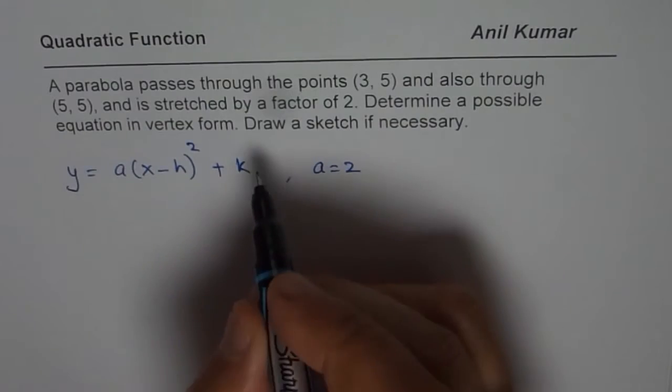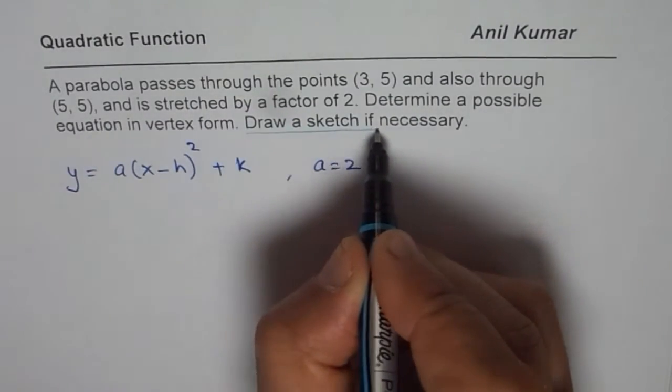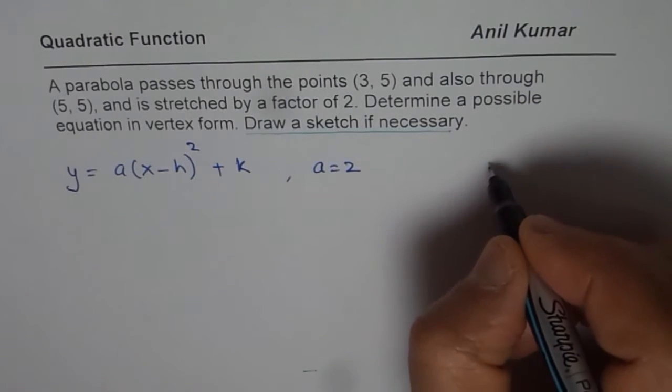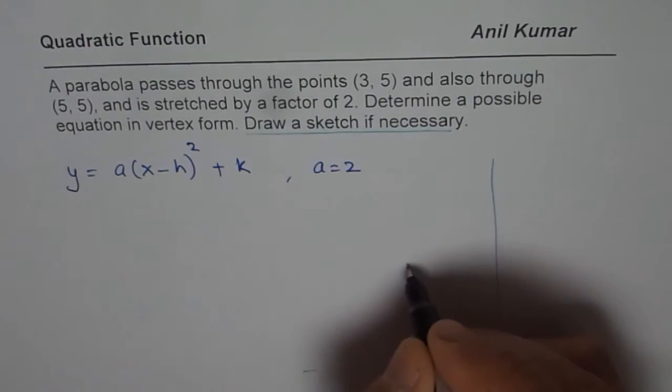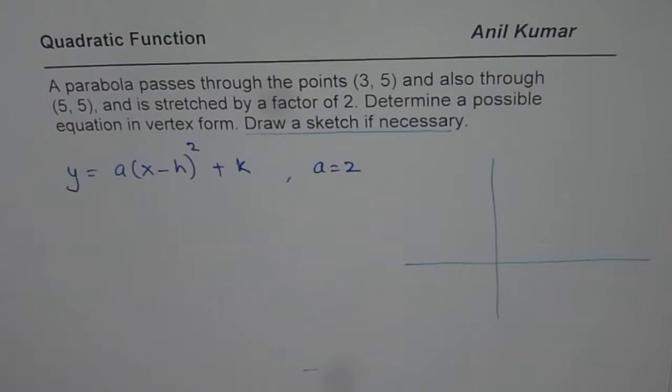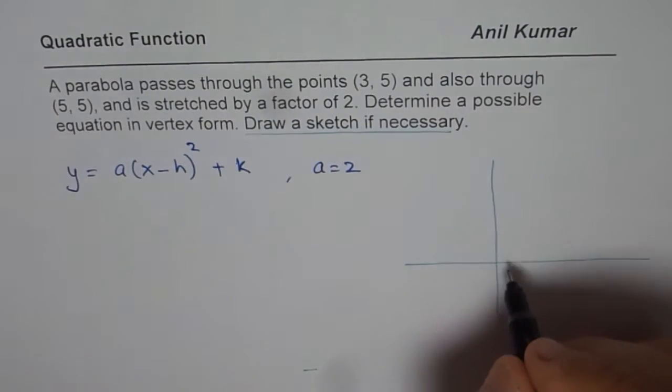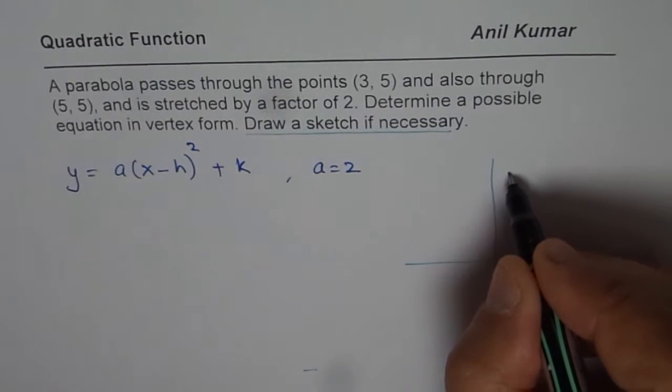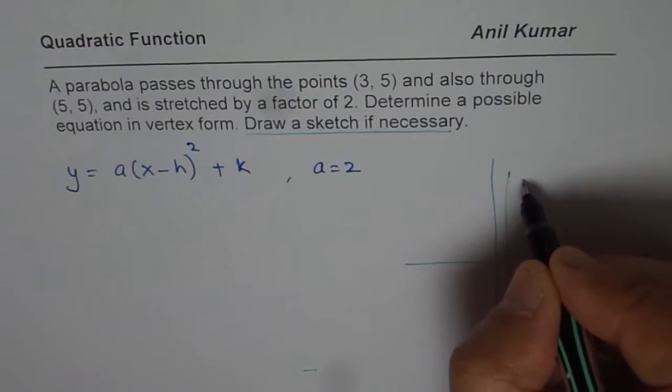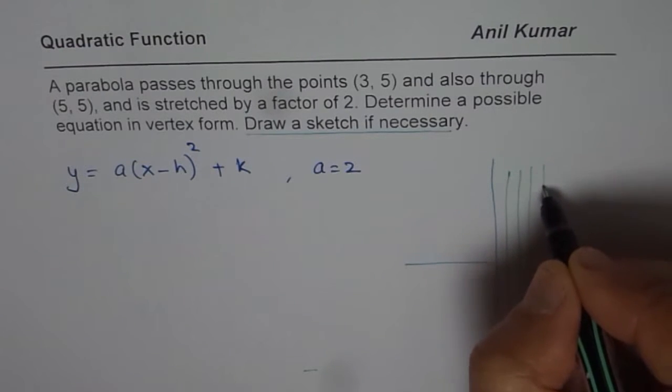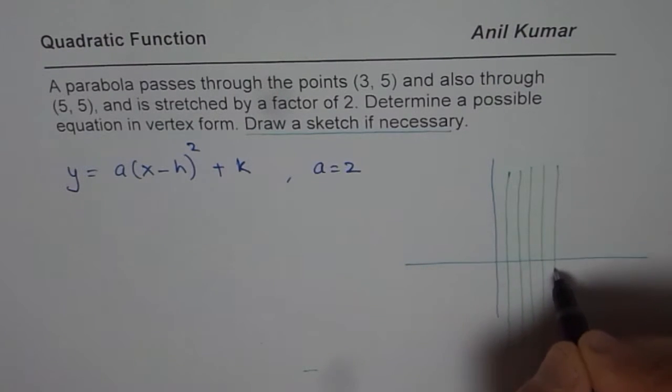Well, let us sketch. So, we also draw a sketch. That is a hint. When you sketch, you will get an idea. Okay. So, what we will do is we will just sketch it. So, what we are given here is that there are two points (3, 5) and (5, 5). So, let us say this is, let me just roughly draw my lines. 1, 2, 3, 4, 5.